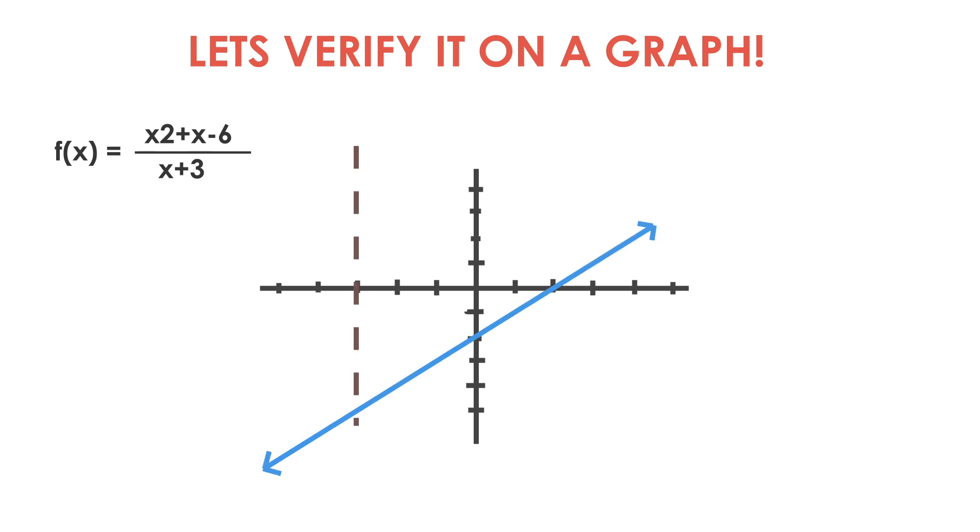But let's verify this answer on a graph. The graph of this function is just a straight line that is undefined at the value x equals negative 3, which is why I have an open circle at x equals negative 3.